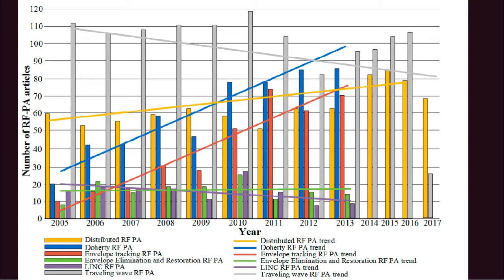These are the trends which we see in peer research papers as reported from 2005 to 2017. One clear trend we can see is that Doherty, RFPA, and envelope tracking — shown in the blue and red lines — are clearly rising. This is very obvious because they offer very high efficiency and very high bandwidth, and as we can see, bandwidth and efficiency are very important criteria when it comes to 5G communication systems.